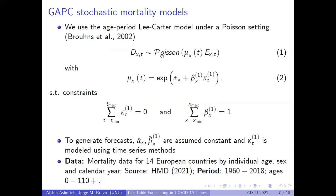The general structure assumes the number of deaths by age and year follows a Poisson distribution, with an analytical linear predictor and a set of parameter constraints to ensure unique parameter estimates. We first estimate the model for all 14 countries considered in this study, obtaining estimates of alpha_x, beta_x, and k_t. We then use cluster analysis on the time-trend coefficient k_t to isolate countries that follow similar trends, and apply the Bayesian model ensemble combination to generate forecasts.